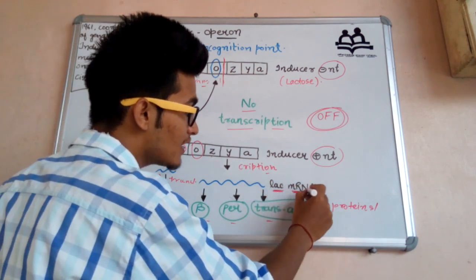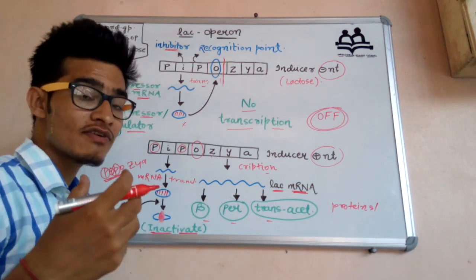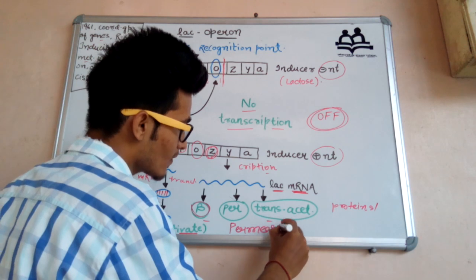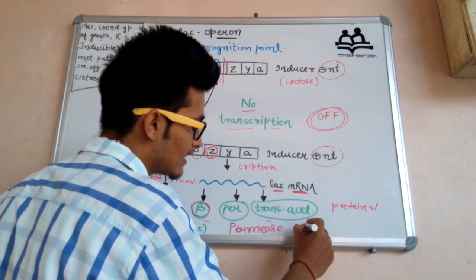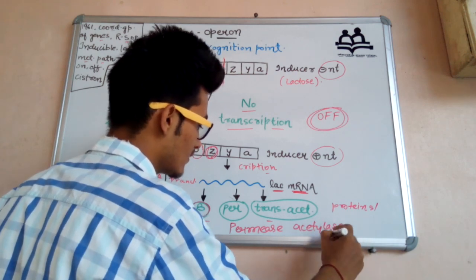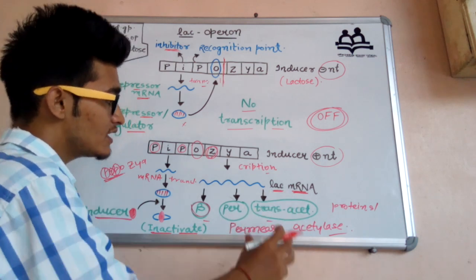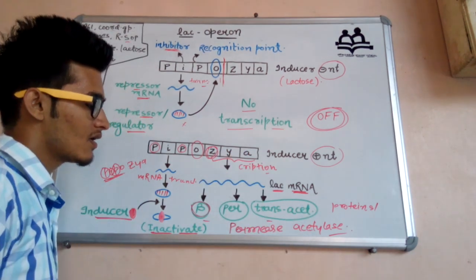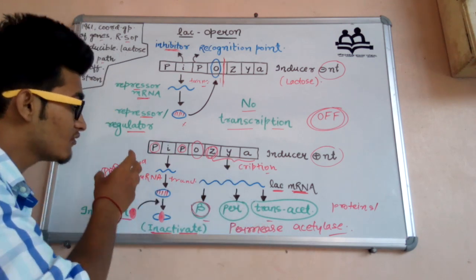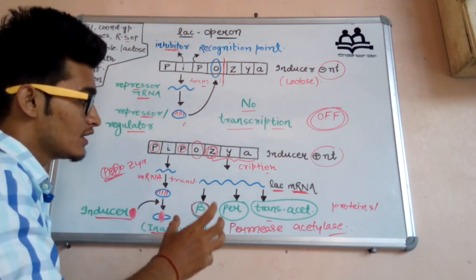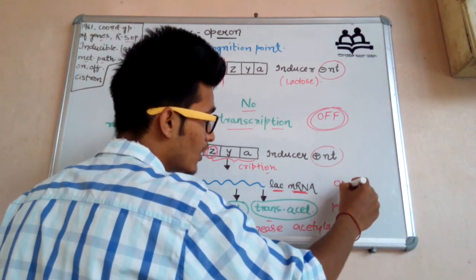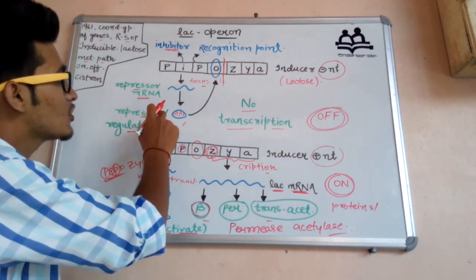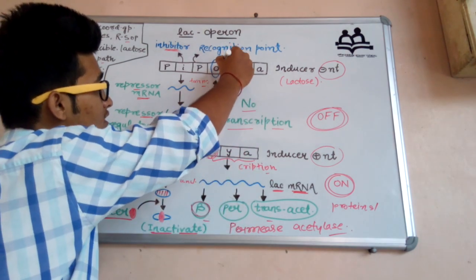First transcription occurs, producing lac mRNA; then translation occurs, producing different kinds of enzymes. The Z gene produces beta-galactosidase, the Y gene produces permease, and the A gene produces transacetylase. These three enzymes break down lactose. Since the inducer was also lactose, this is why this operon is known as an inducible operon. This state is known as the ON state, because transcription and translation are occurring.